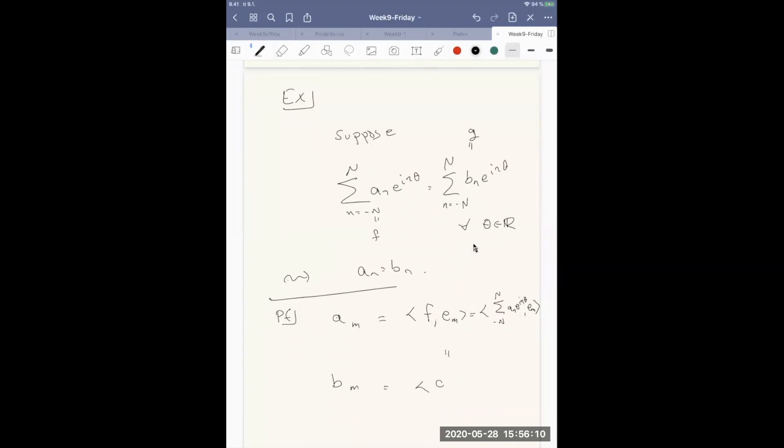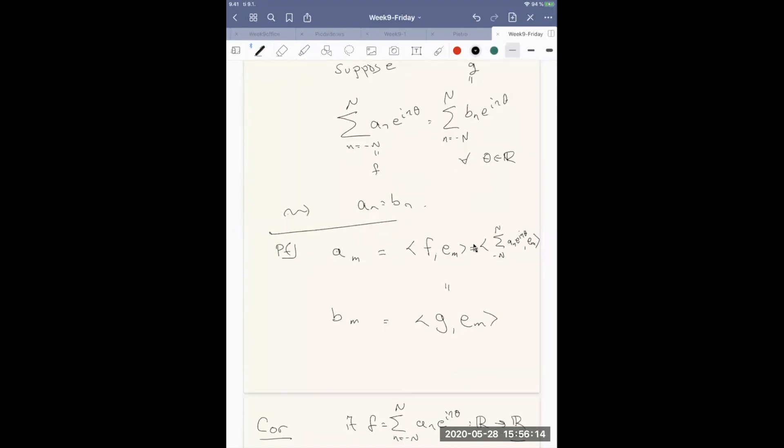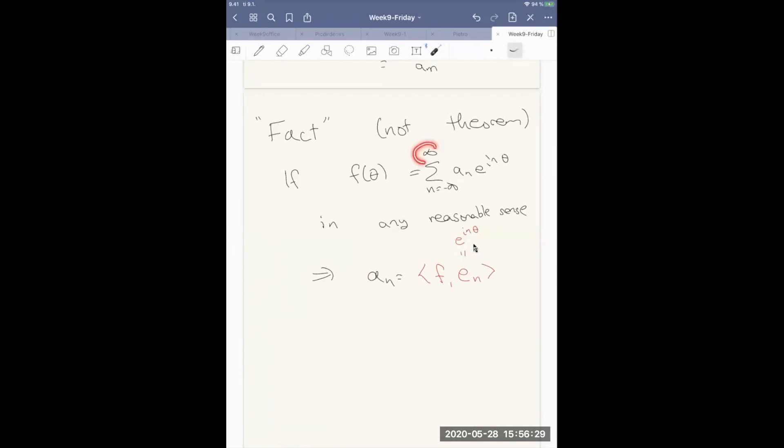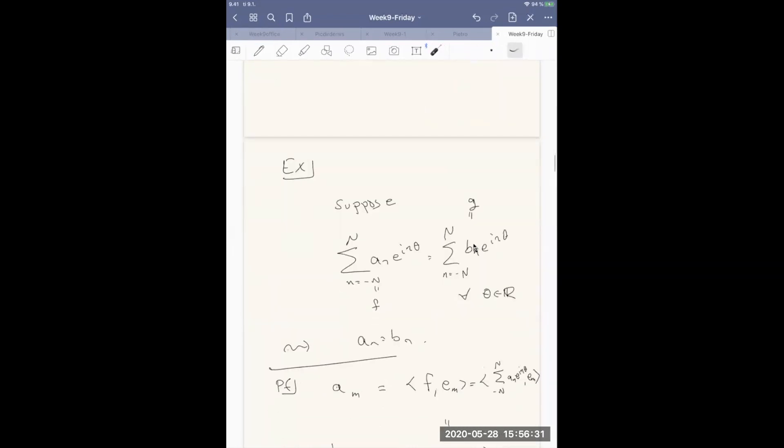But similarly, on the other side, the bm term is g inner product with em. And this is valid because f and g are finite sums. The issue that we will have to work with in general is that we have infinite sums, and then we have to worry about convergence.